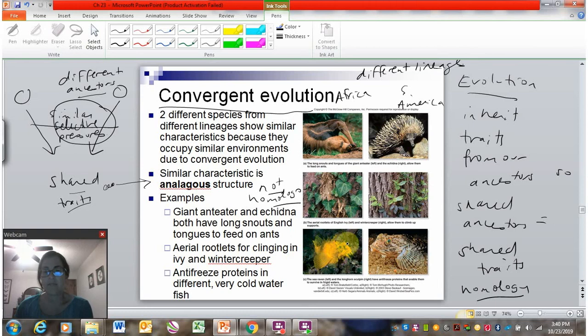And a less visible example are these two fish here. Again, they're from very different lineages of fish, but they both live in cold, deep water. So that's the selective pressure. And so in order to survive in that cold, deep water, they have to have special antifreeze proteins in their blood. So the antifreeze proteins help keep their blood from freezing in these very cold environments. And again, they got this similar trait because of the selective pressure of living in cold water, even though they have different ancestors that did not have the trait.